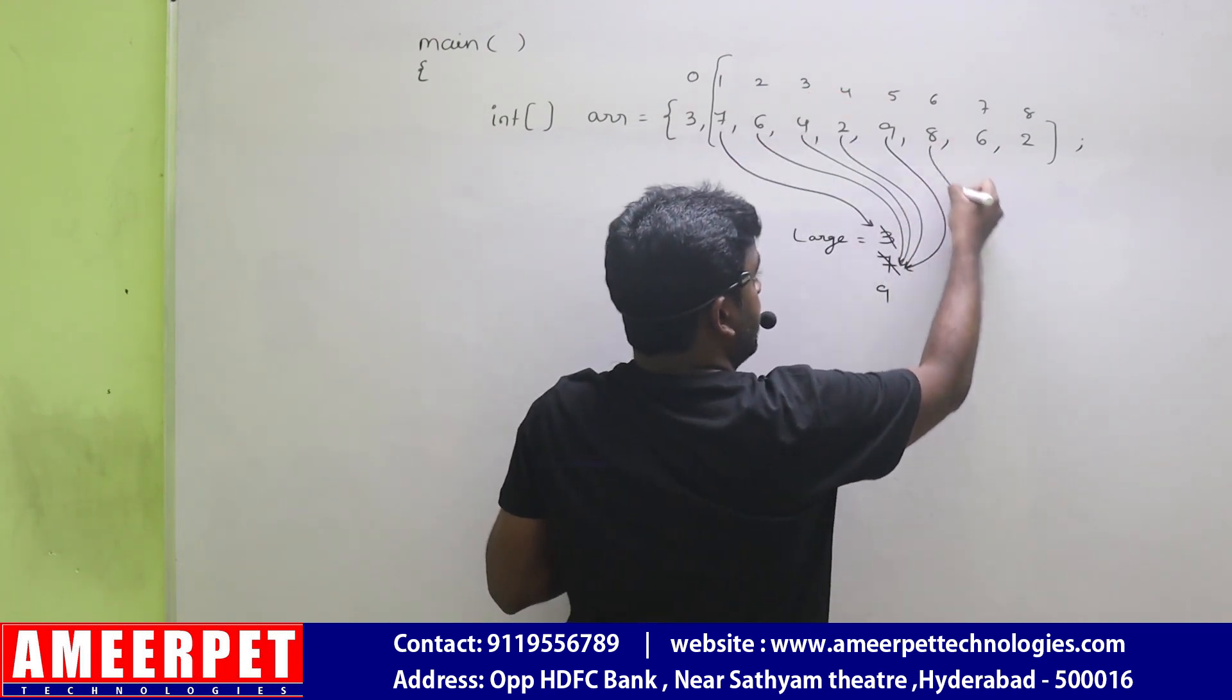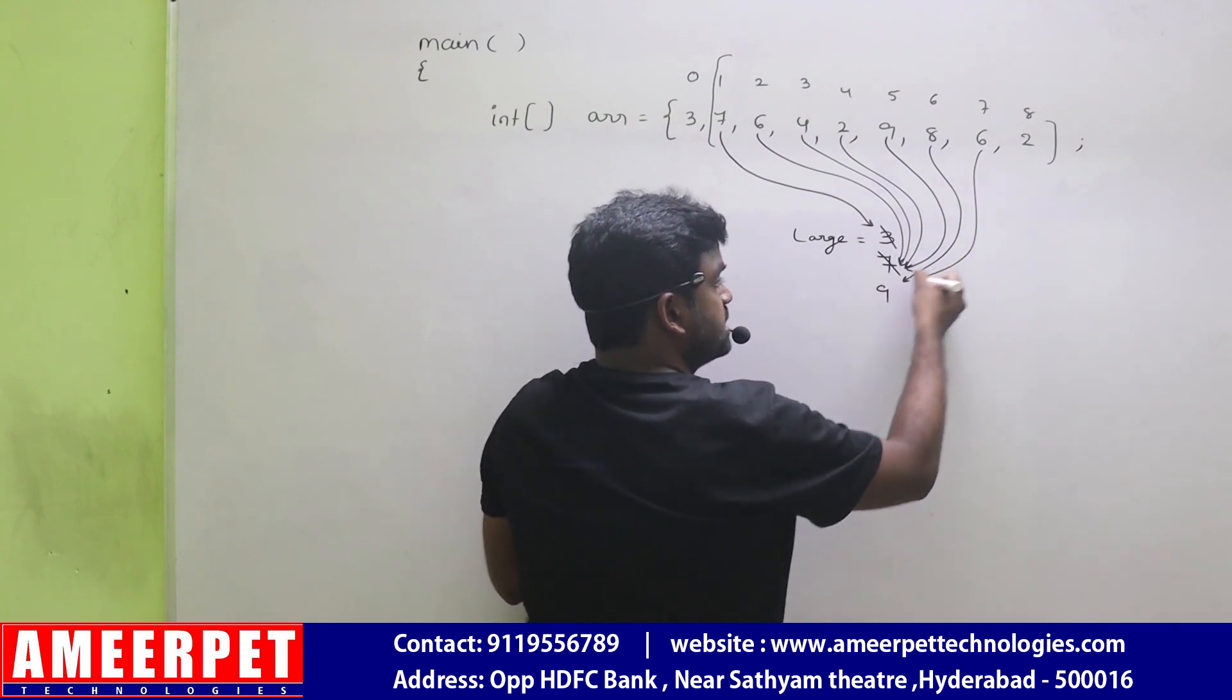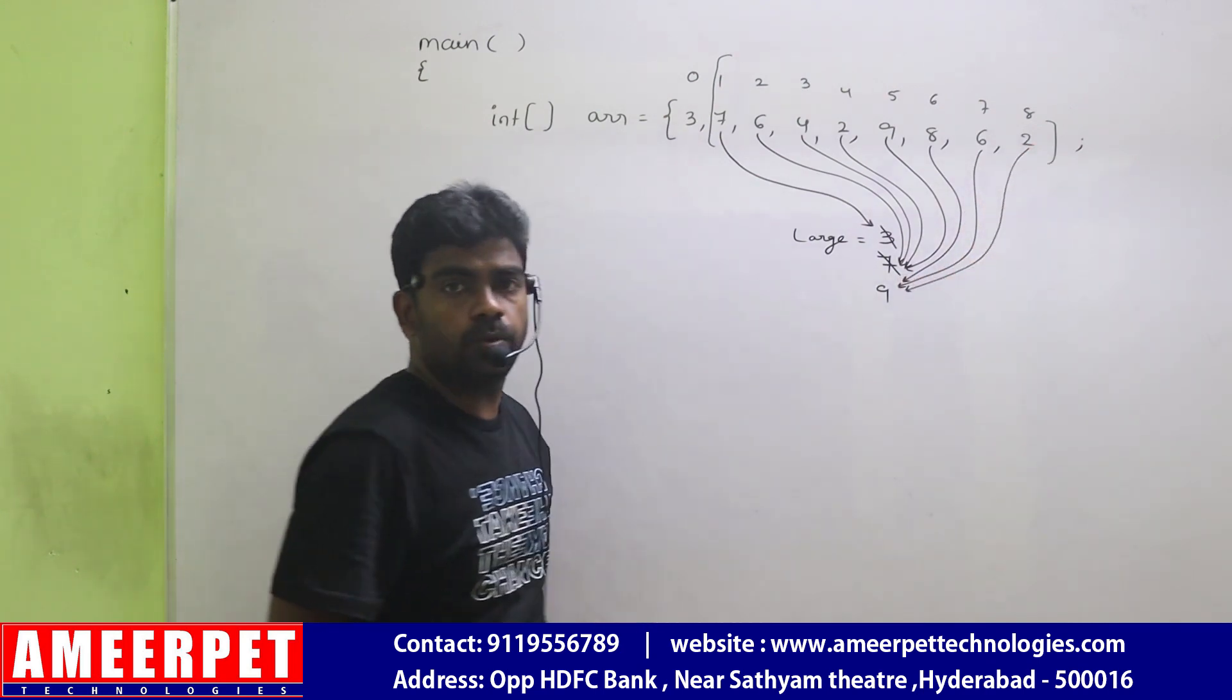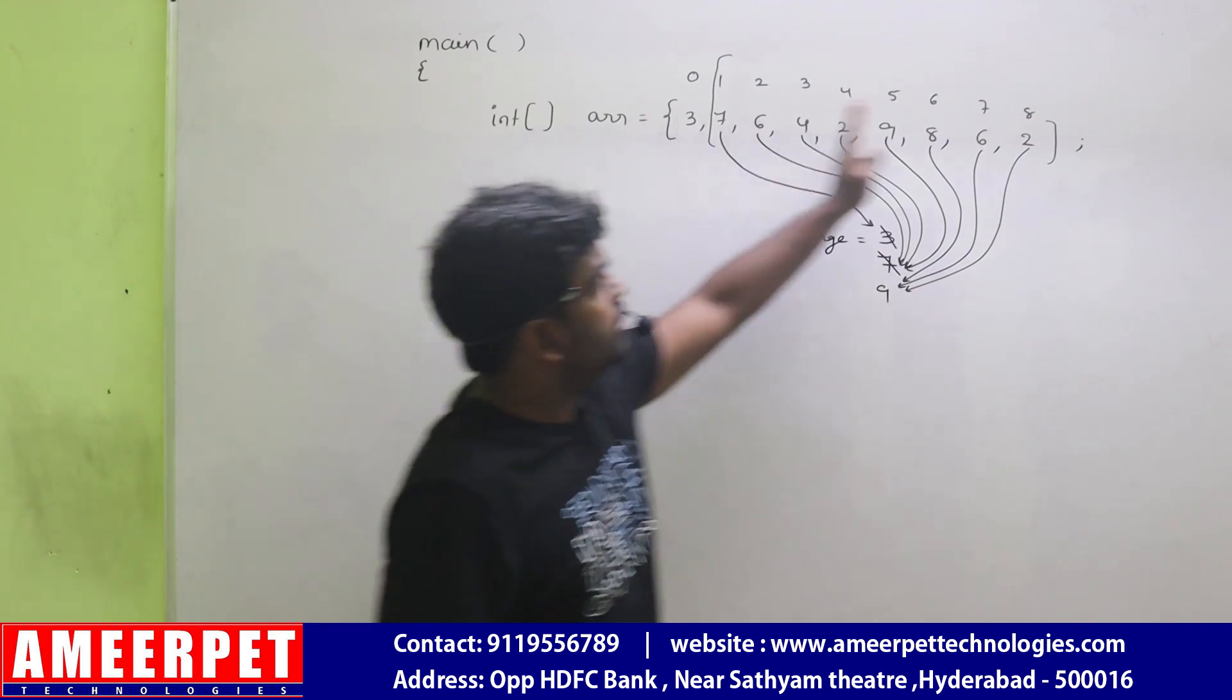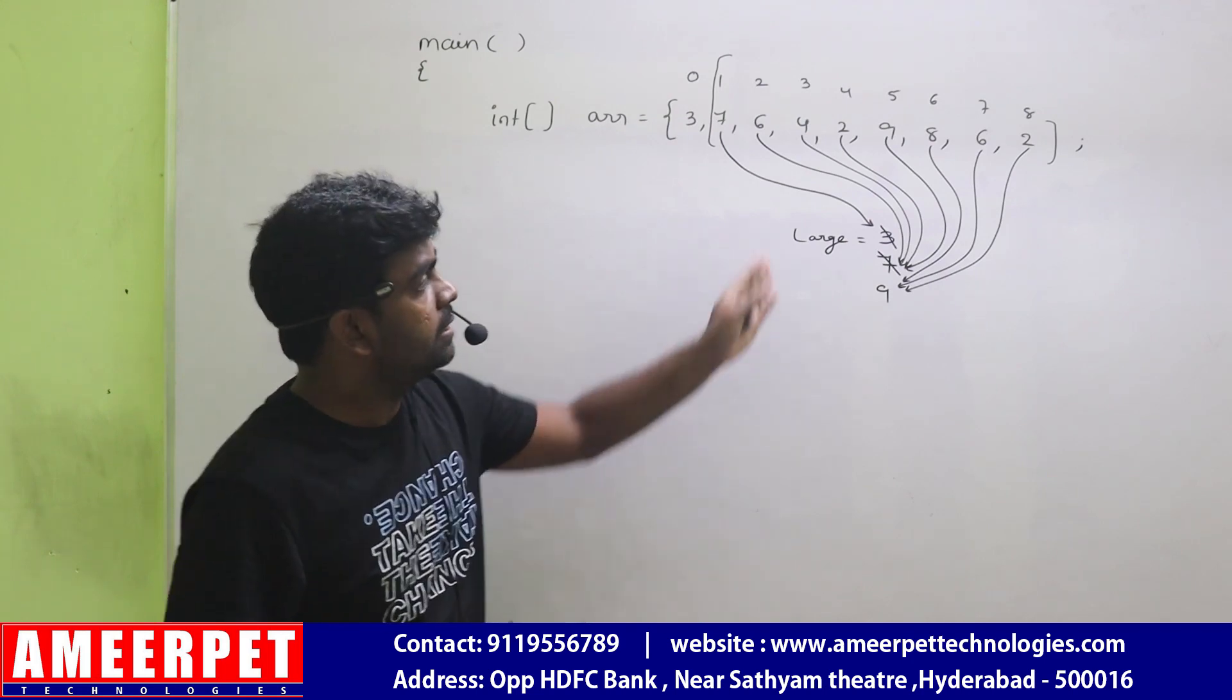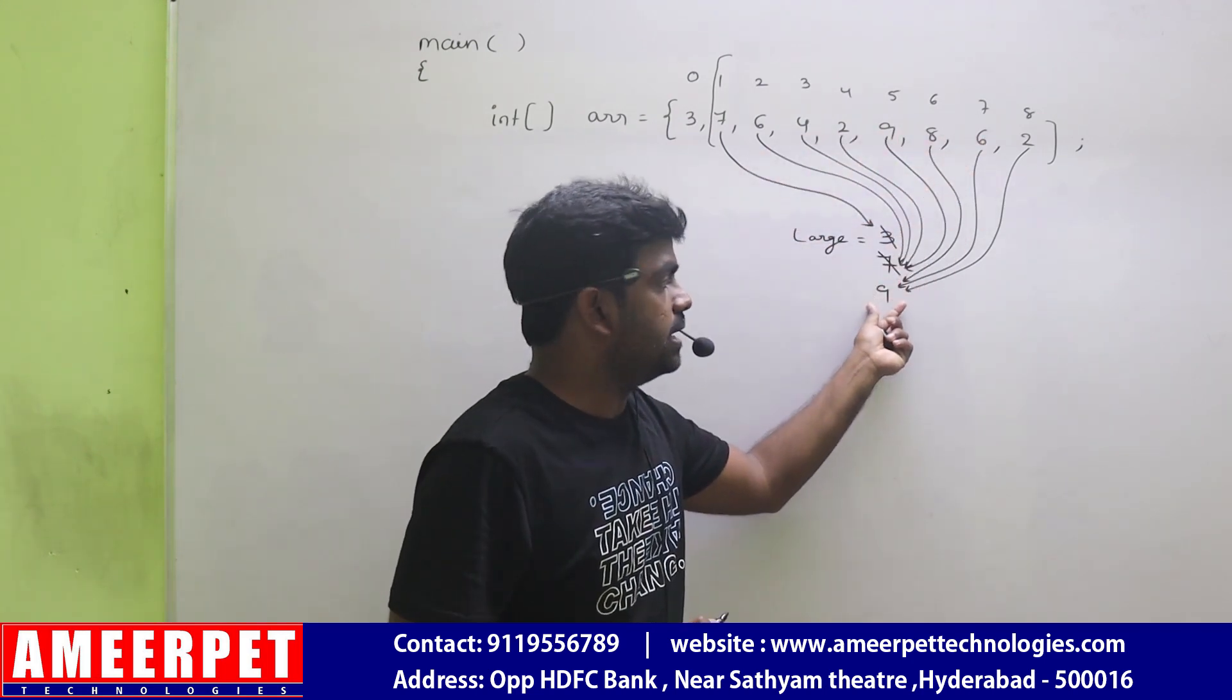Next, checking if 8 is greater than 9. No. 6 is greater than 9? No. 2 is greater than 9? No. So it is completed. Up to end we have repeated. We didn't find any other largest number other than 9.